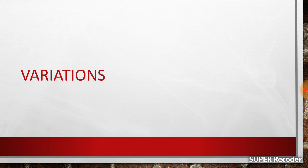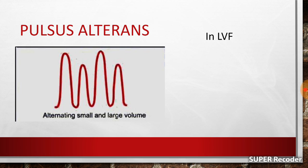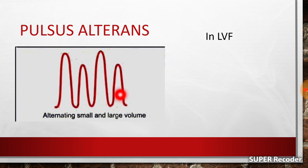Now I will focus on the variations occurring in the arterial pulse. The first variation is pulsus alternans. As the name suggests, there is something alternating. In this type of pulse, we see an alternating small volume pulse, then a large volume pulse, then a small volume pulse again. This is mainly seen in case of left ventricular failure. In left ventricular failure, the left ventricle does not have enough power to contract and send a large volume of blood.